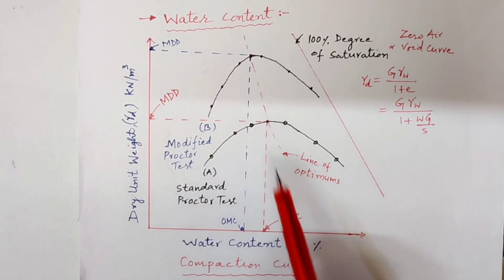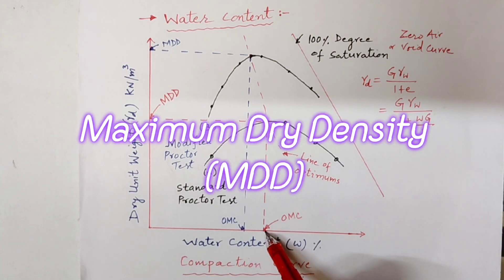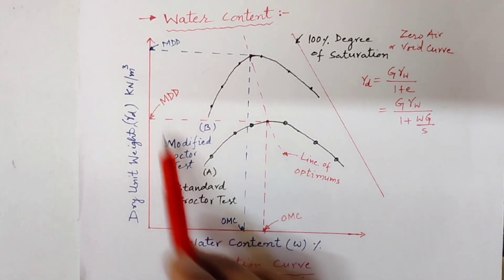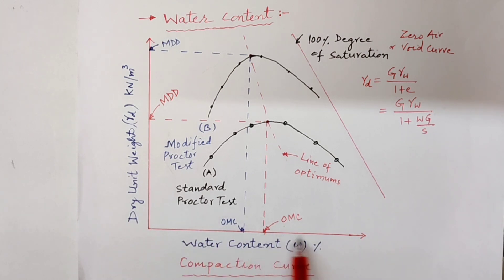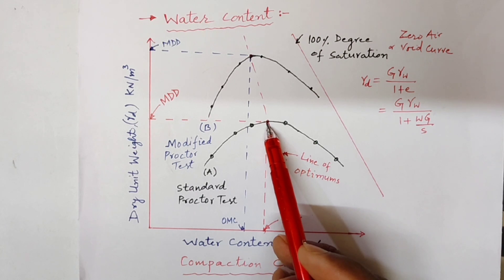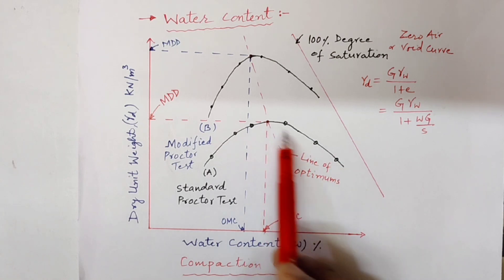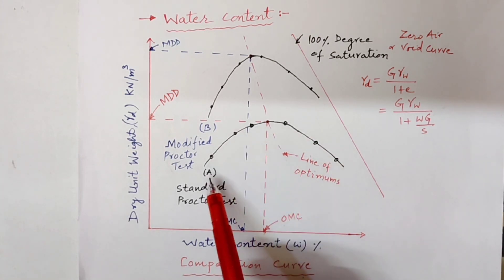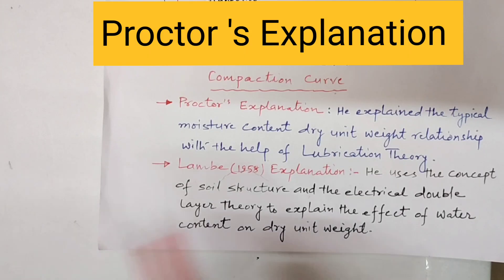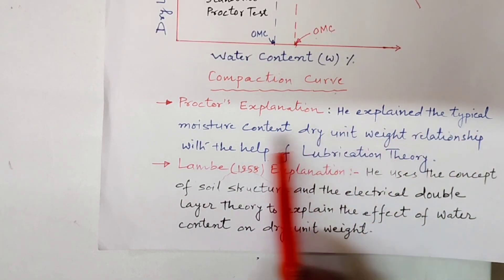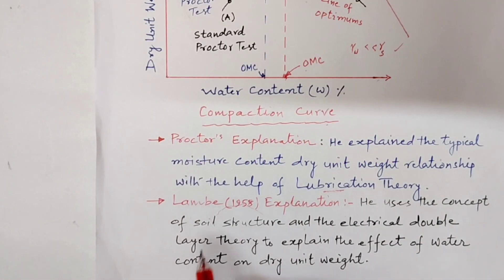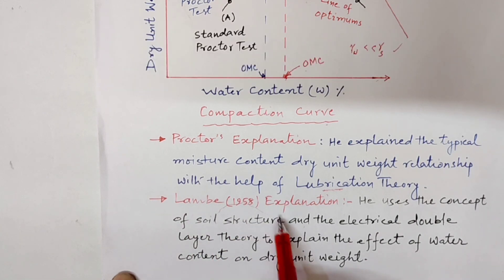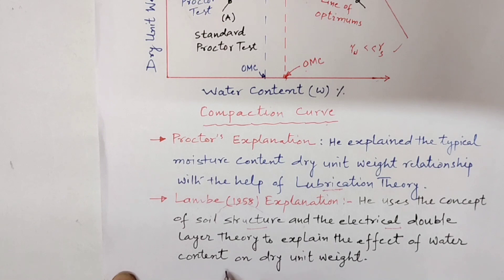The peak point of the compaction curve corresponding to the maximum dry unit weight is gamma_d_max. The water content corresponding to the maximum dry unit weight is known as the optimum moisture content (OMC). As per Proctor's explanation, he explained the typical moisture content–dry unit weight relationship with the help of lubrication theory. Another explanation was given by Lem in 1958, who used the concept of soil structure and electrical double layer theory to explain the effect of water content on dry unit weight.